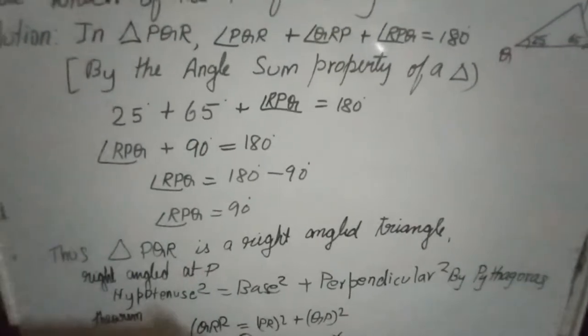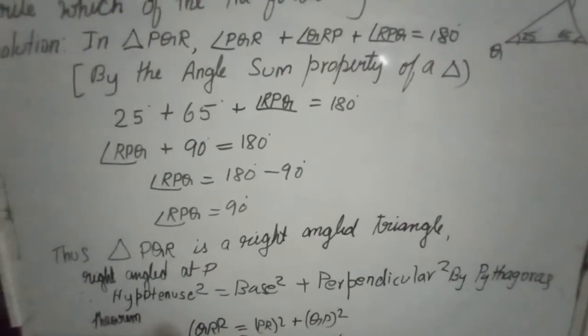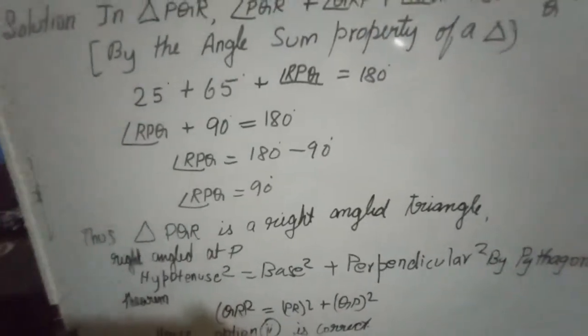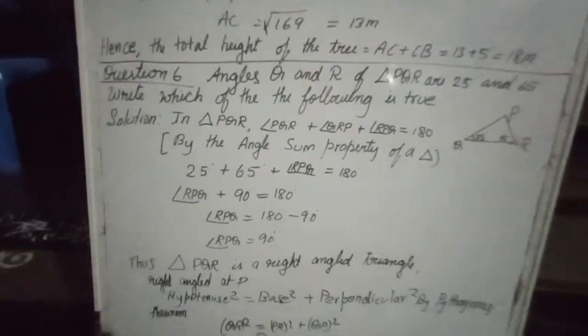So your answer is correct. QR square is equal to PR square plus QP square. Hence, the option second is correct.